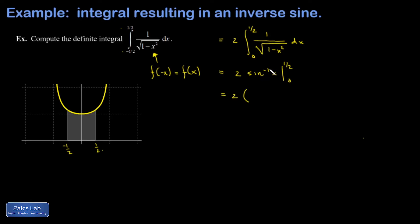Then I plug in: what's the inverse sine of one half? That's the angle whose sine is one half. If I think about the unit circle, the angle whose sine is one half is pi over six, minus the angle whose sine is zero, which is zero. So I can cancel a factor of two and I get pi over three.